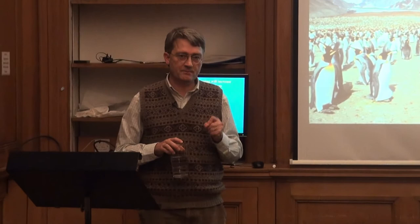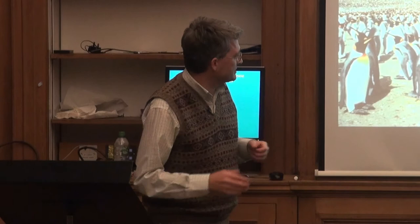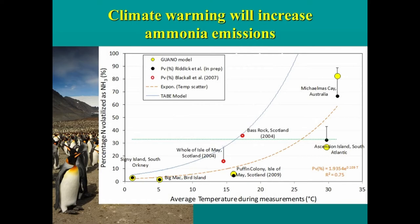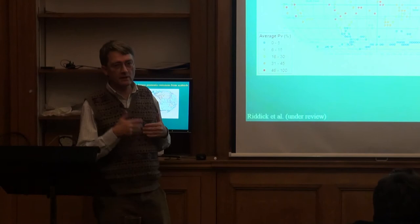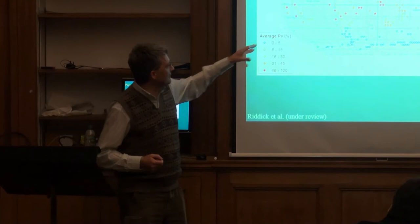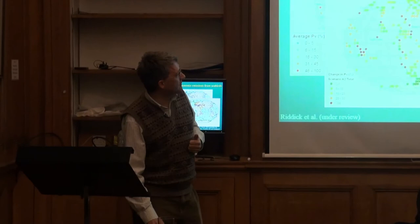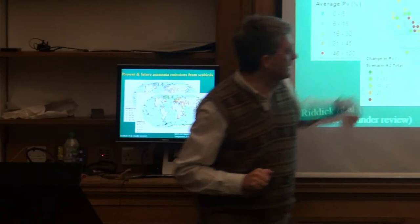Ammonia is particularly interesting — it's volatile, so warming increases emissions. We've done studies on penguins and seabirds around the world, measuring what percentage of excreta ends up in the air as ammonia: ranging from two to three percent in cool areas up to 40 to 50 percent in warm ones. Looking globally, the warmest areas show up to 50 to 100 percent volatilization. Put that through a climate change scenario and you get a substantial estimated increase in emissions, with trade-offs between regions that get warmer versus those that get wetter.